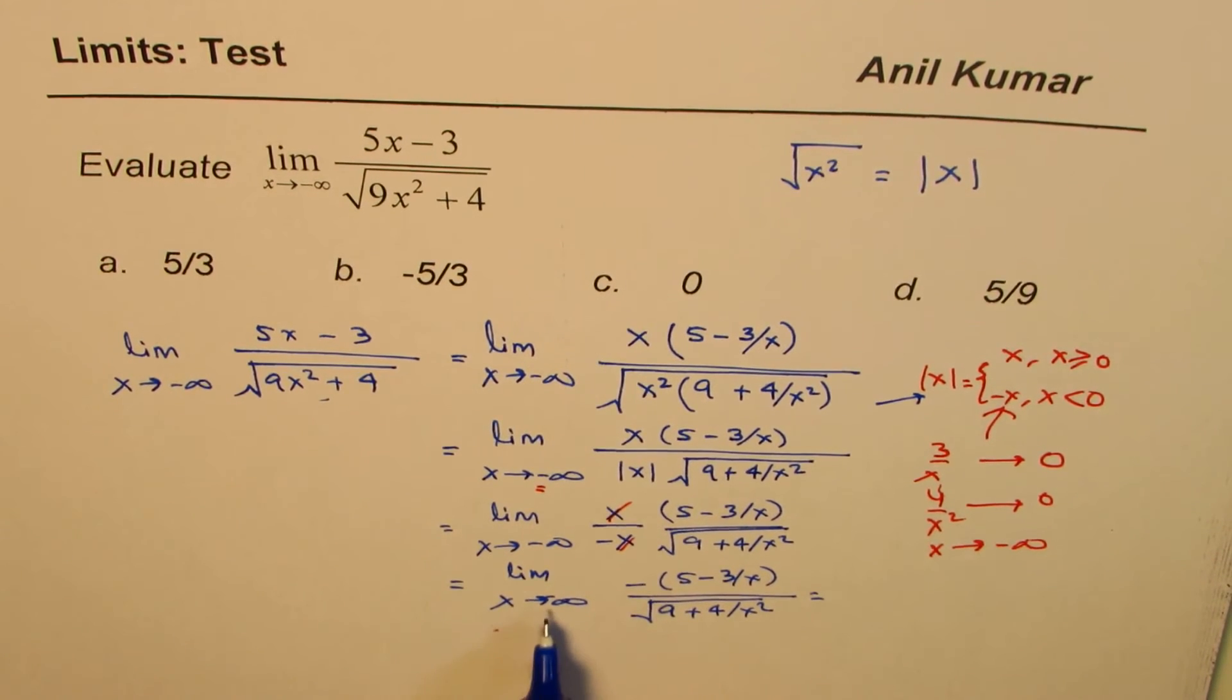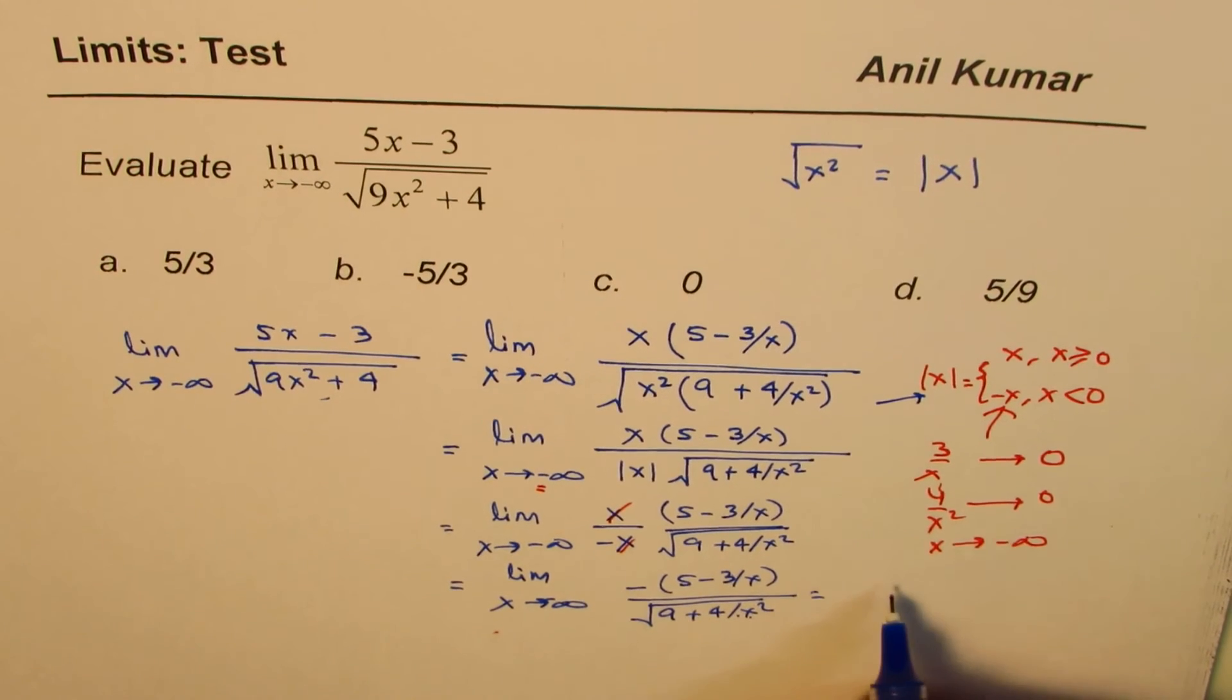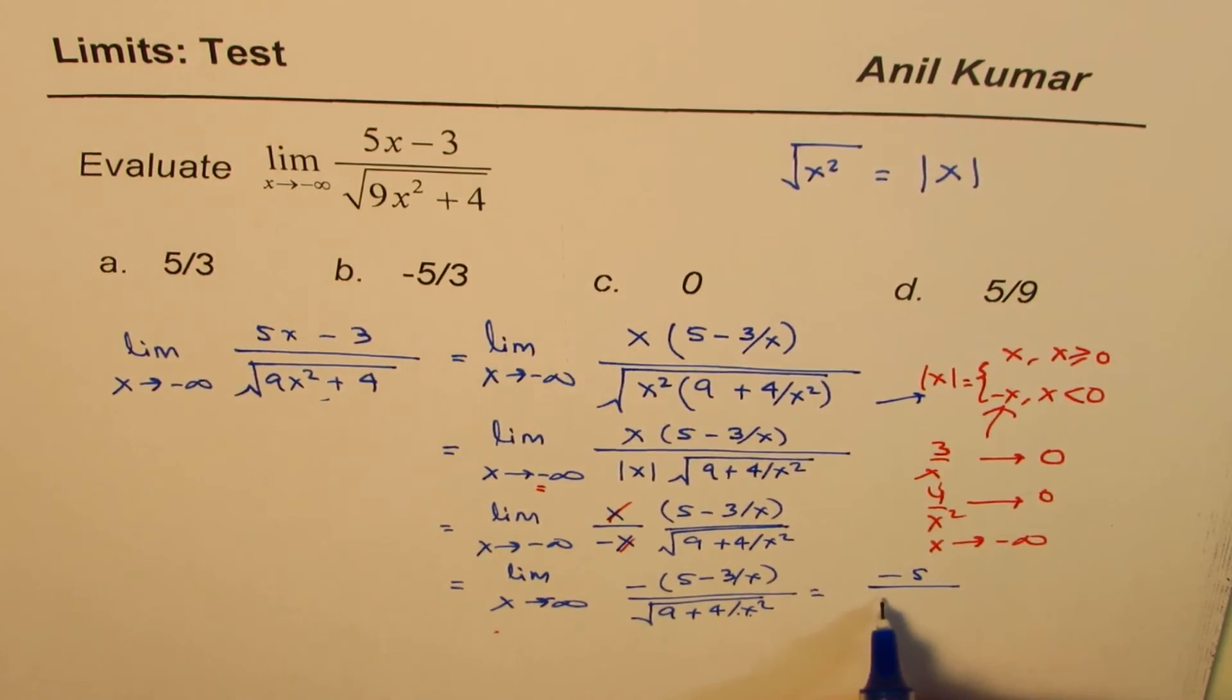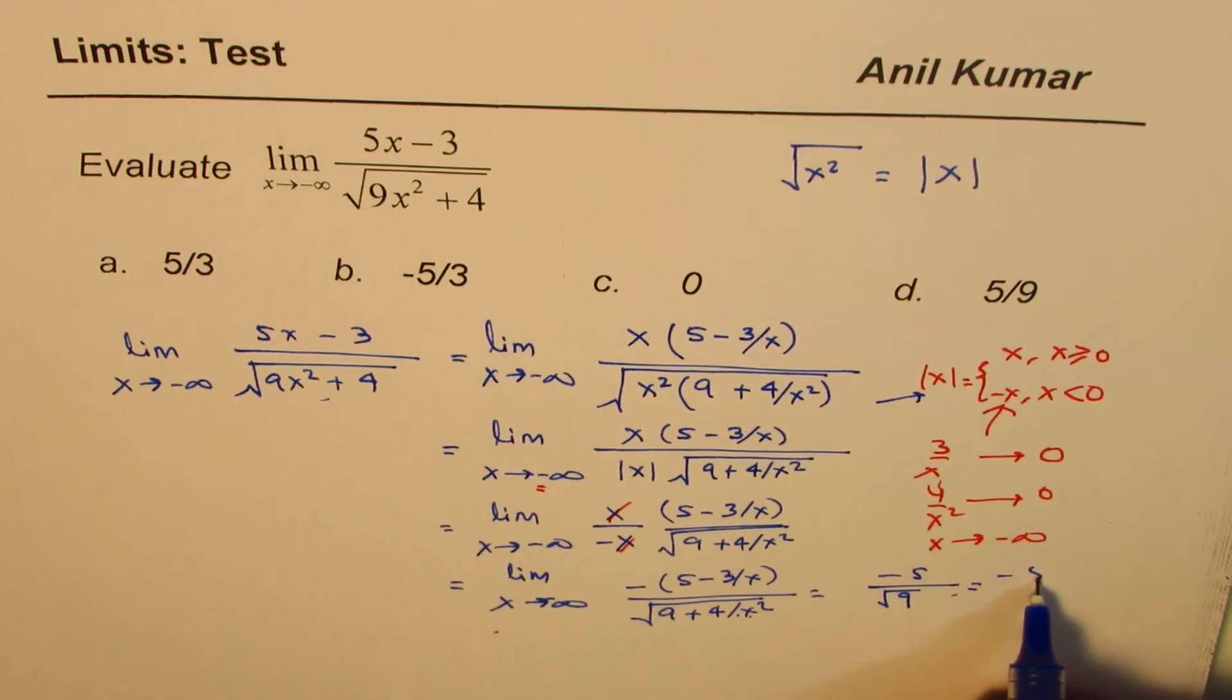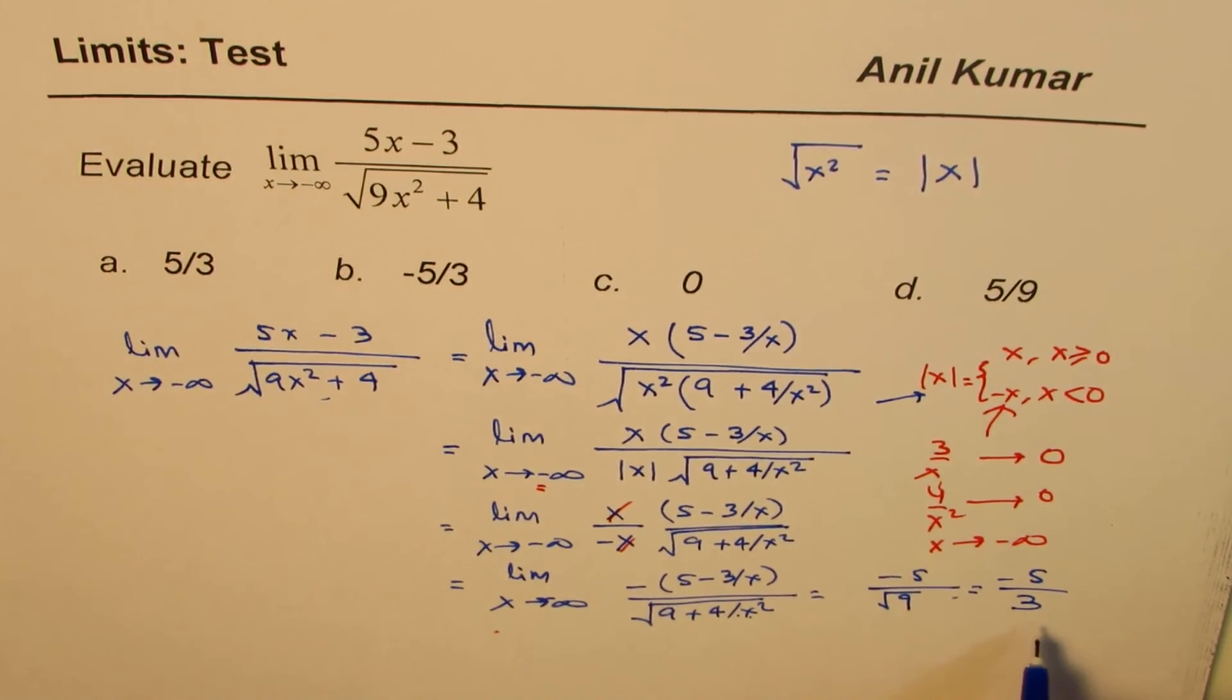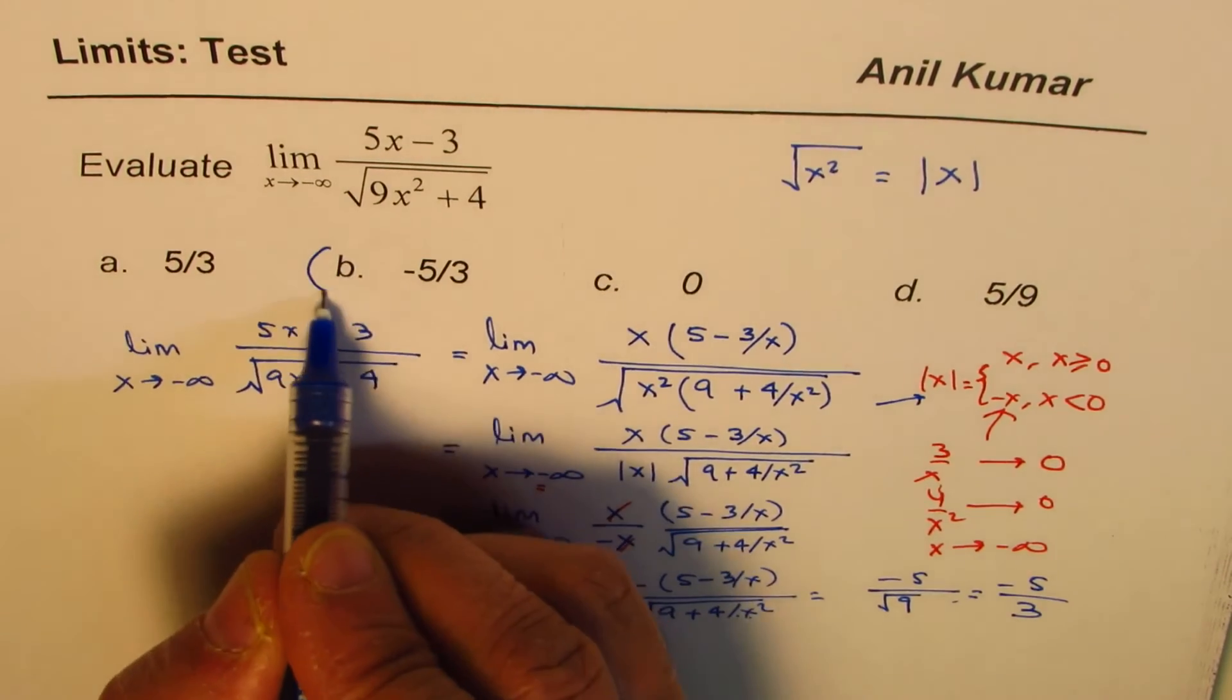Now, as x approaches minus infinity, these terms will approach 0. So we have minus 5 over square root of 9, which is 3. So we have minus 5 over 3. So that is our answer. So our answer is B.